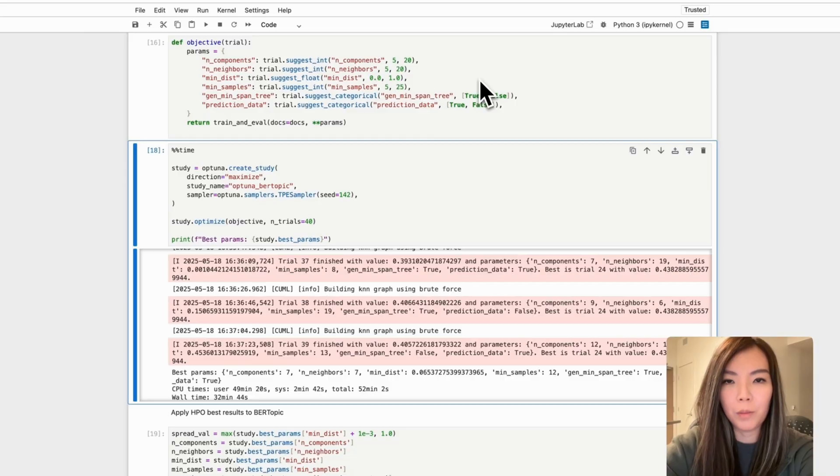The HPO search optimizes these parameters to maximize the objective function. Now let's dive into the hyperparameter optimization (HPO) coding stack, where we use Optuna to fine-tune the parameters for UMAP and HDBSCAN to achieve the best clustering and topic modeling results with BERTopic.